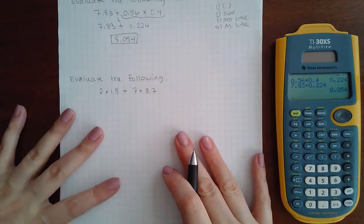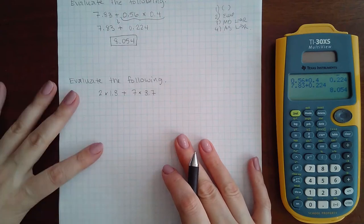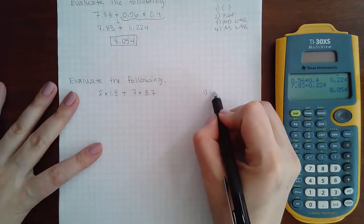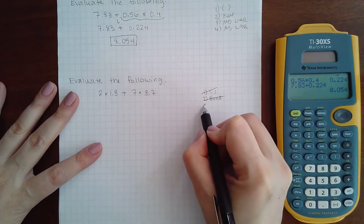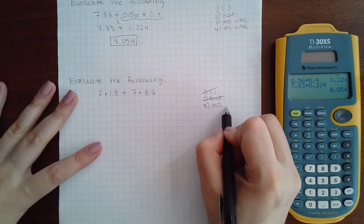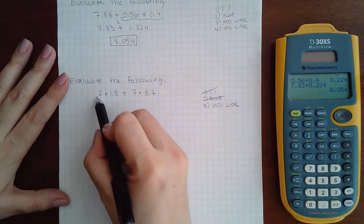Okay the next one, same situation, we want to make sure we follow our order of operations. So one, there's no parentheses in this problem. Two, there's nothing to evaluate in this problem. Three, I do have some multiplying and dividing but I do need to do them from left to right, so the first one I need to do is this.